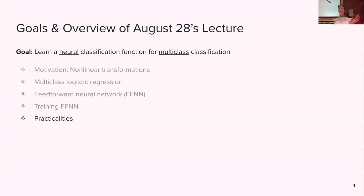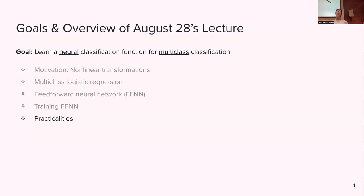I want to continue with where we started last time. Are there any questions I should address before we move on? Last time we talked about training a neural classifier for multi-class classification — we extended from binary to multiple classes.